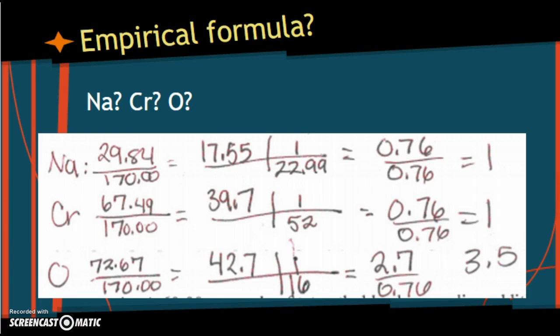Let's look at another one. What would the empirical formula for this one be? It's all worked out for you, and you just have to look at the ratios. Those are going to be our subscripts. So Na1, Cr1, O3.5. What are you going to do? Double it and get Na2, Cr2, and O7.